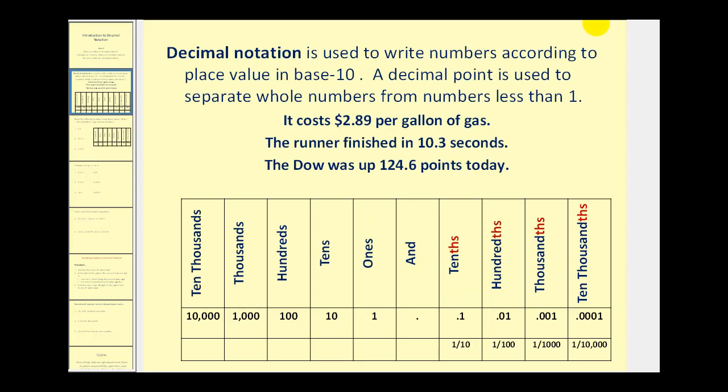Decimal notation is used to write numbers according to a place value in base 10. A decimal point is used to separate whole numbers from numbers that are less than one.